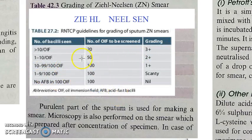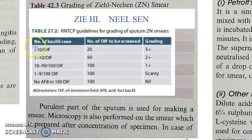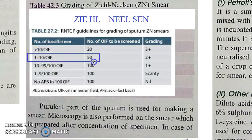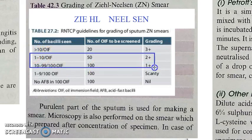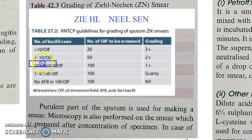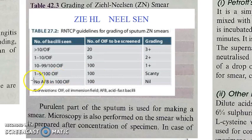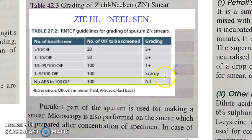For the lower grades, you screen 100 fields. Based on what you find in those 100 fields, you grade as 1 plus, scanty, or nil. Nil means no AFB seen in 100 oil immersion fields. So to summarise: greater than 10 per field in 20 fields = 3 plus; 1–10 in 50 fields = 2 plus; fewer bacilli in 100 fields = 1 plus or scanty; no AFB in 100 fields = nil.